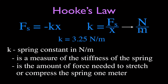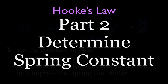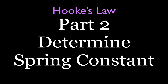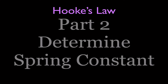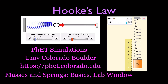Now we can move on to part two and determine the spring constant for a spring. We're going to use one of the excellent simulations from PhET Simulations out of the University of Colorado at Boulder. The simulation we're using is called Masses and Springs Basics, and we'll be using the lab window. Everything we discuss applies whether the spring is vertical with a hanging mass, or horizontal with the spring being pushed or pulled.